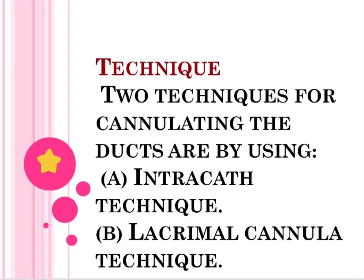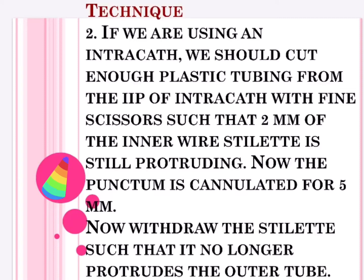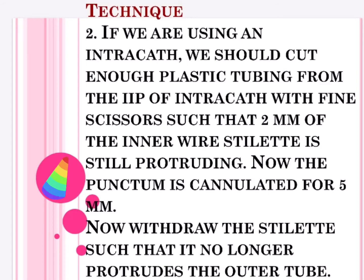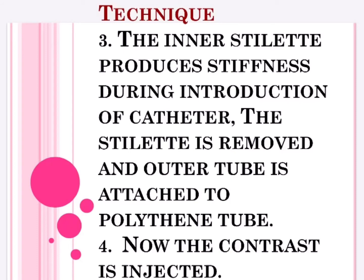There are two techniques for cannulating the ducts: a) intricate technique, b) lateral cannula technique. When using the intricate technique, cut enough plastic tubing from the tip of the intricate with fine scissors so that 2 mm of the inner wire stilet is still protruding. The punctum is then cannulated for 5 mm. Withdraw the stilet so it no longer protrudes from the outer tube. The inner stilet provides stiffness during introduction of the catheter; once removed, the outer tube is attached to polythene tubing for contrast injection.